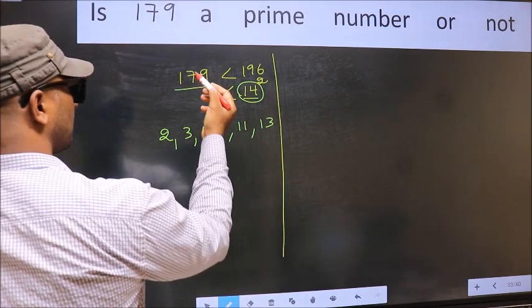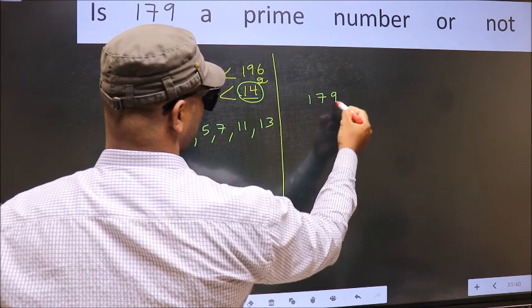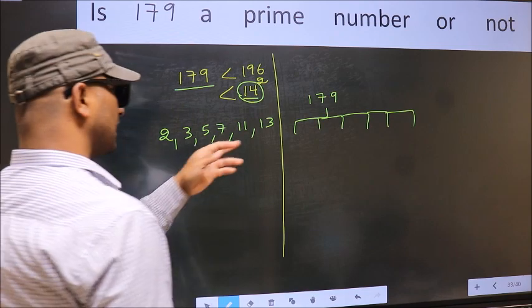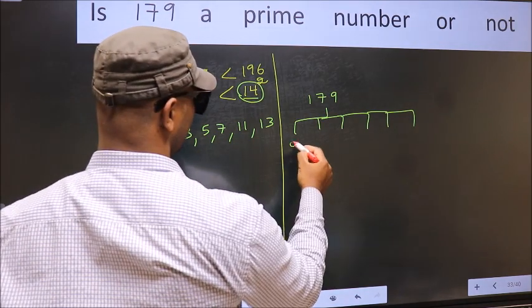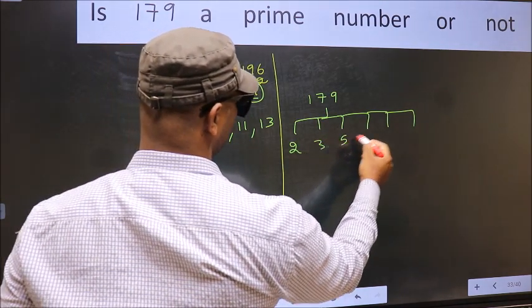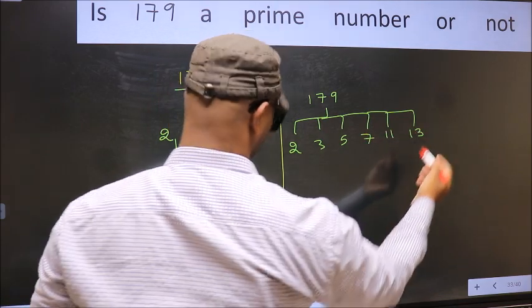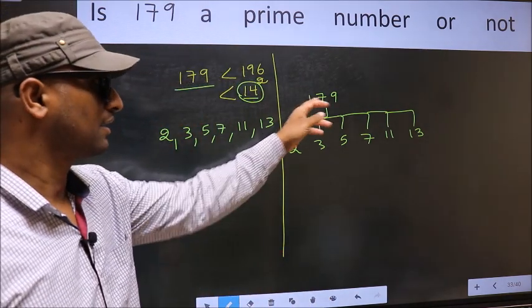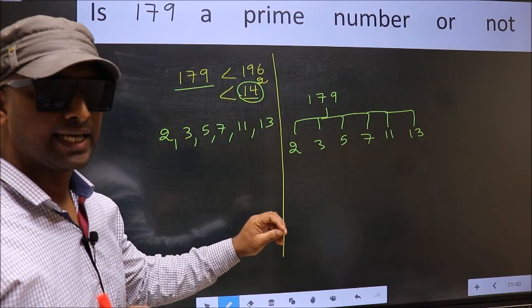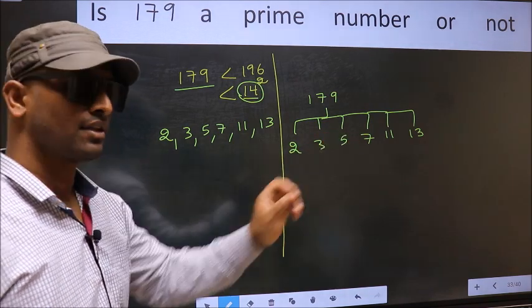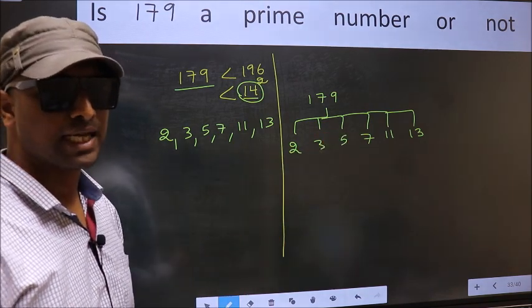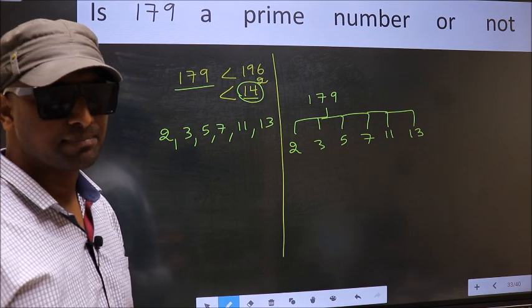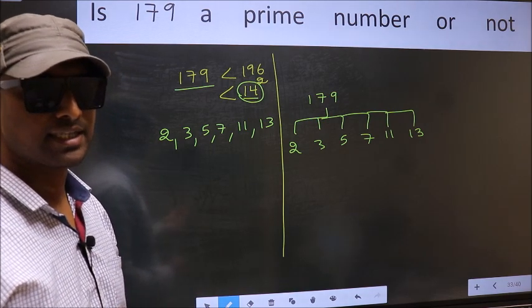Now, for this number, we should check divisibility by all these numbers: 2, 3, 5, 7, 11, and 13. If the given number is divisible by any one of these numbers, we say it is not a prime number. Otherwise, it is a prime number. Did you understand the method? Let us check the divisibility.